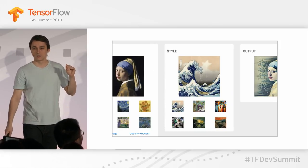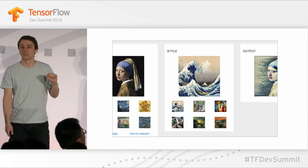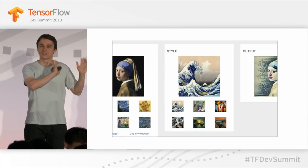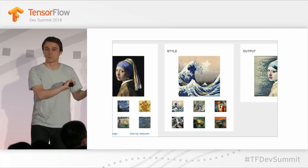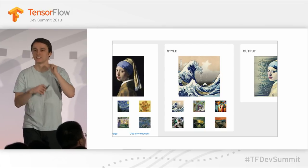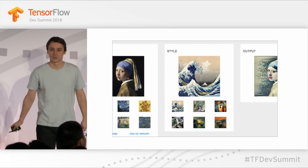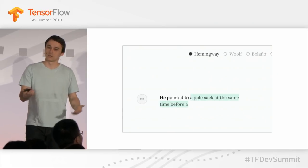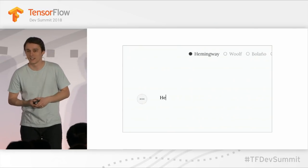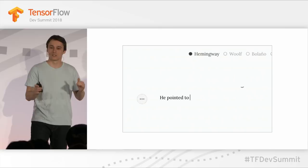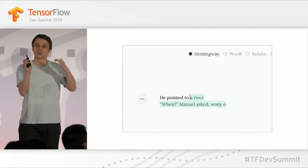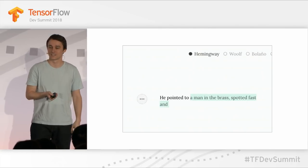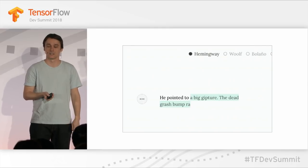When we released it, we had incredible momentum. The community took DeepLearn.js, took existing models in Python, and ported them into the browser to build interactive fun things. One example is style transfer. Another person ported a character RNN and built a novel interface that allows you to explore all the different possible endings of a sentence, all generated by the model in real time.